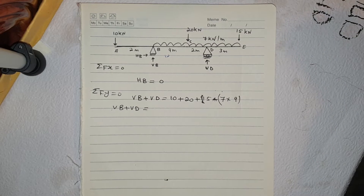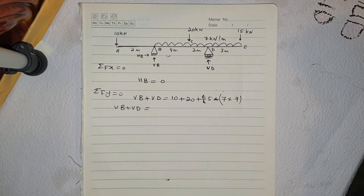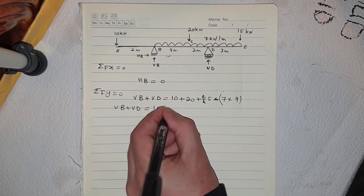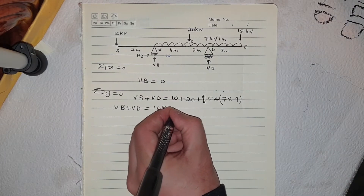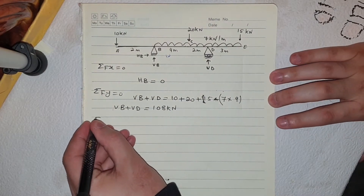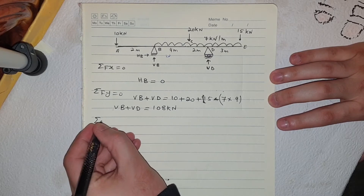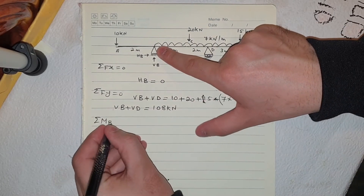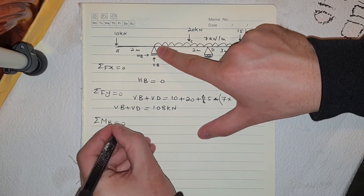So 7 times 9 plus 15 plus 20 plus 10 gives us 108 kilonewton. Therefore Vb plus Vd equals 108 kilonewton. The third step: we are going to take moments. I will take a moment at point B which is equal to zero.